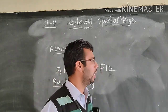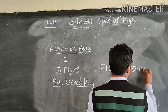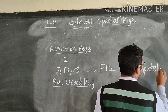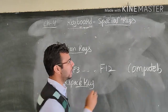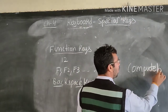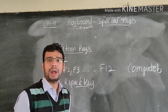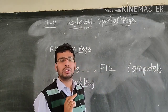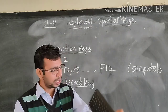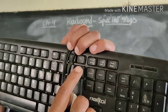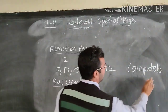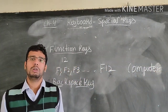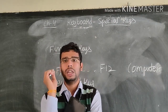Let me show you an example. I have typed 'computer.' I accidentally typed a 'B,' so now I am going to erase it. Backspace key is used to erase the letter from the back side, or from the last. I will press the backspace key — see, that letter is erased. Now I can type the correct letter. So, backspace key is used to erase the letter from the last.